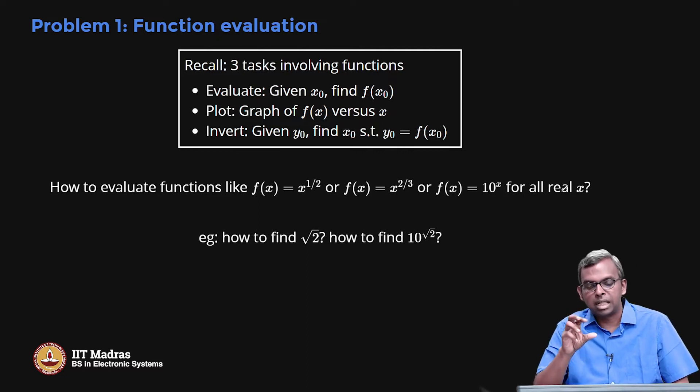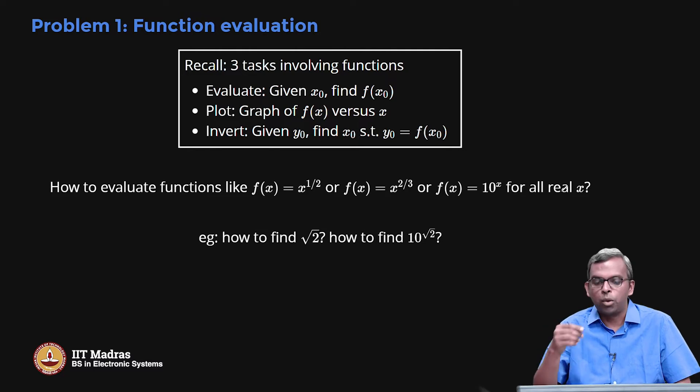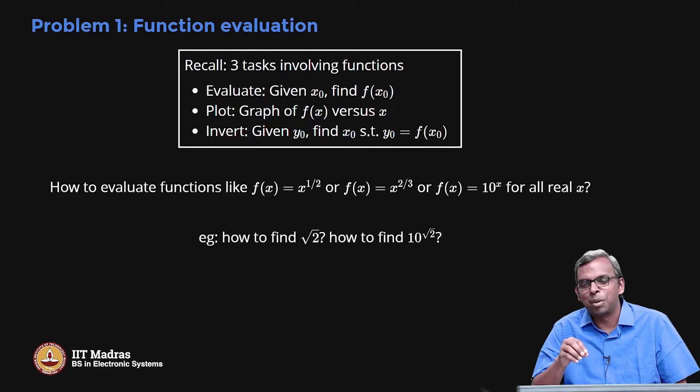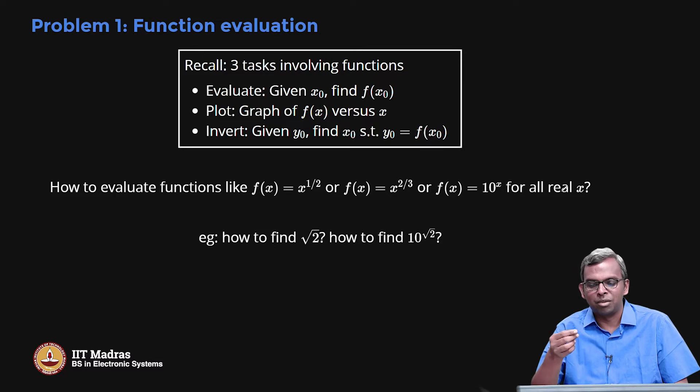Let me ask some interesting questions about the computation now, the evaluation of the function. If you look at a function like x power 1 by 2 or x power 2 by 3 or 10 power x, these are functions that you are able to plot, you are able to calculate. If you take Desmos or any other tool or a calculator, it can calculate these functions values for you. How is it that it is calculating that? Like for instance, a very simple question: How do you compute the value of square root of 2? We all know some 1.414. Where does it come from? How do you calculate?